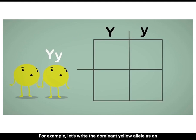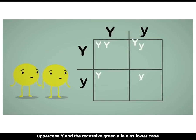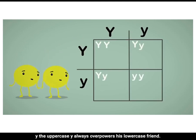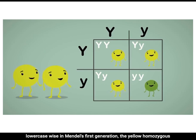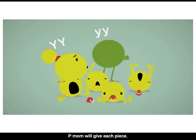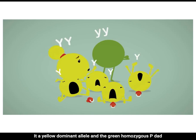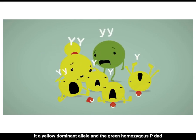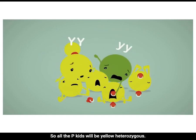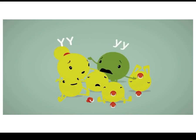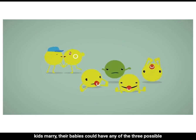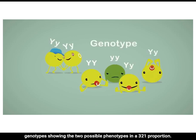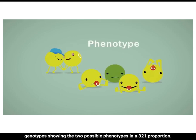Let's write the dominant yellow allele as an uppercase Y, and the recessive green allele as a lowercase y. The uppercase Y always overpowers the lowercase, so the only time you'd get green offspring is if you have two lowercase y's. In Mendel's first generation, the yellow homozygous pea mom will give each pea kid a yellow dominant allele, and the green homozygous pea dad will give a green recessive allele, so all the pea kids will be yellow heterozygous. Then, in the second generation, where the two heterozygous plants breed, their offspring could have any of the three possible genotypes, showing the two possible phenotypes in a three-to-one proportion.